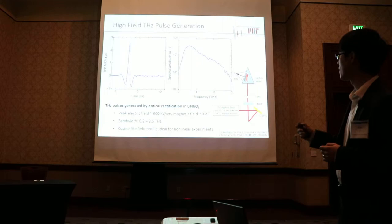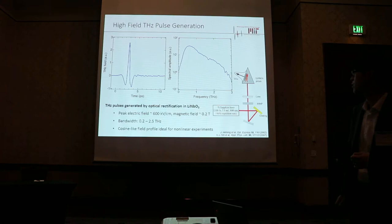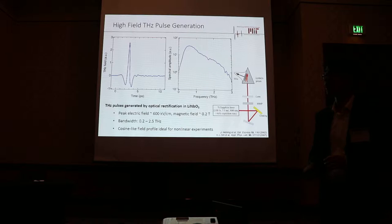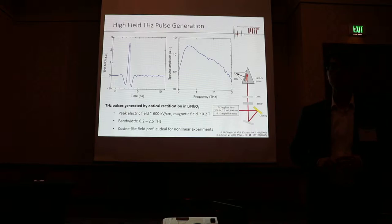Here's an example of the generated terahertz pulse — an experimentally measured terahertz pulse and its Fourier transform. As you can see, the bandwidth of the pulse spans from about 0.2 to 2.5 terahertz, and the peak electric field can reach 600 kilovolts per centimeter, which corresponds to a peak magnetic field of 0.2 tesla.